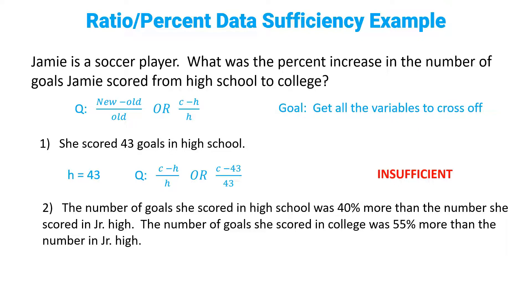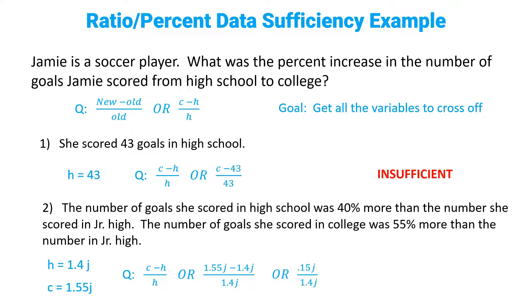Statement two: the number of goals she scored in high school is 40% more than the number she scored in junior high, and the number she scored in college was 55% more than junior high. In math, that means H equals 1.4J and C equals 1.55J. We substitute those into our ratio: C minus H over H becomes 1.55J minus 1.4J over 1.4J. Combining gives us 0.15J over 1.4J — the J's cancel. That is sufficient. The answer is B.